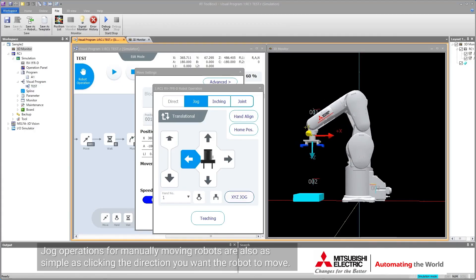Jog operations for manually moving robots are also as simple as clicking the direction you want the robot to move.